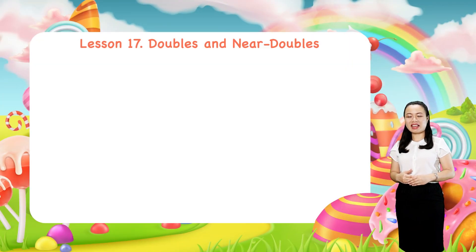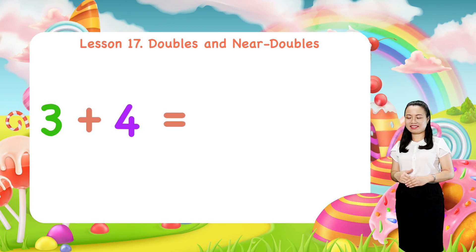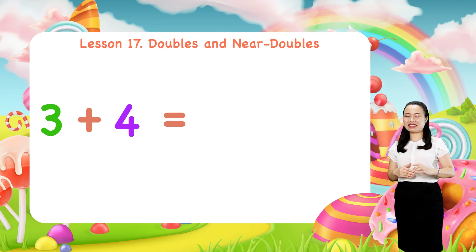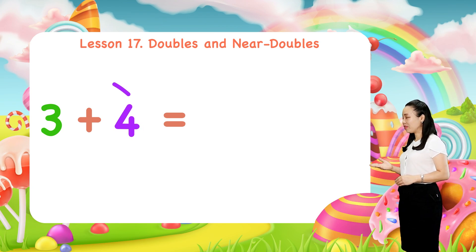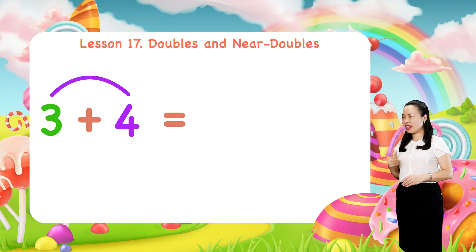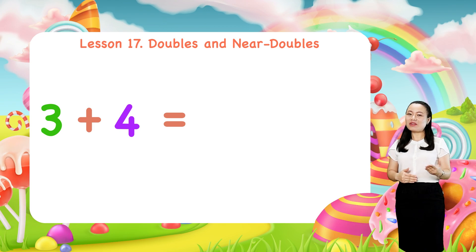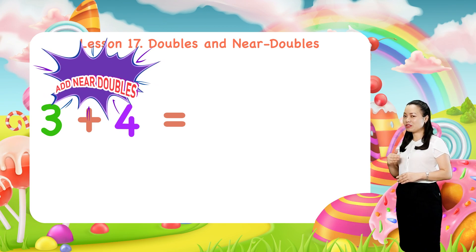Next, look at this addition: 3 plus 4. Notice, 4 is a number that follows 3. In other words, 3 and 4 are consecutive numbers. When two consecutive numbers are added together, we say, add near doubles.